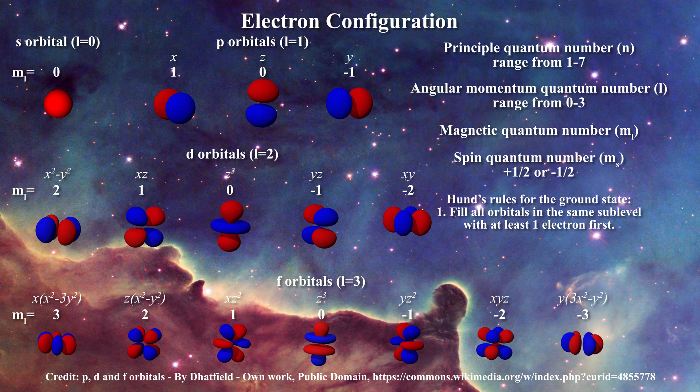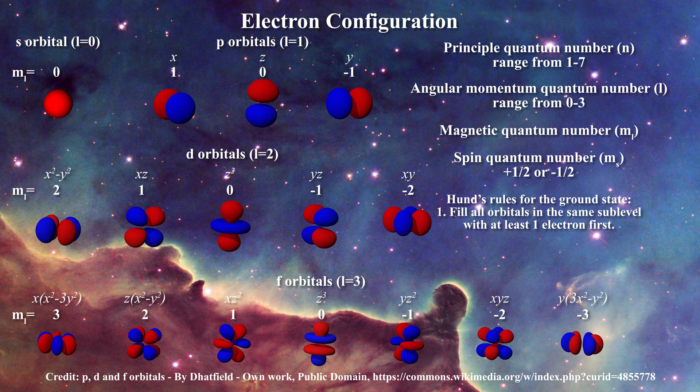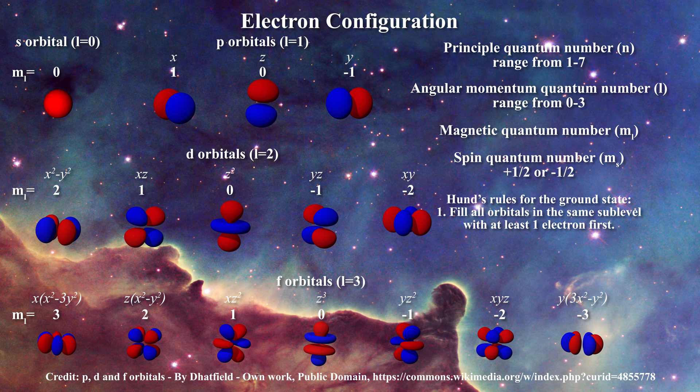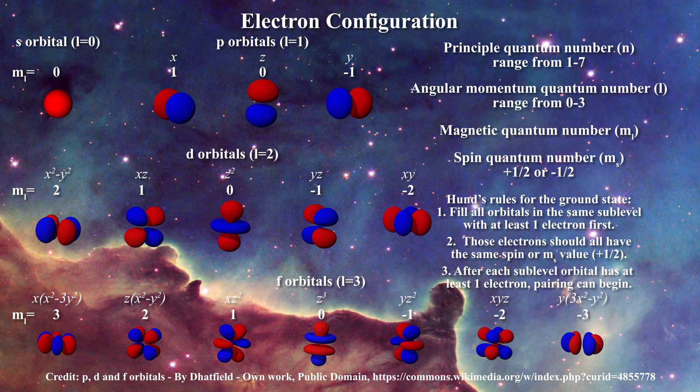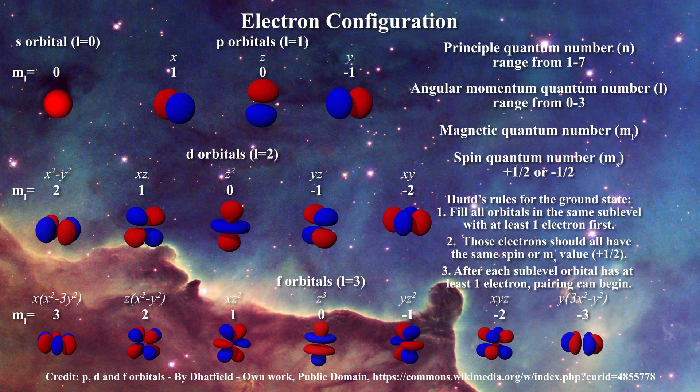Therefore, if three electrons must be placed in p orbitals, a single electron should be placed in each orbital and no pairing of electrons should occur. In that case all the electrons should also have the same spin, usually taken as plus one half. If you have four electrons then you can pair two in the first m sub l equal one shell and so on. The rule about how spins are arranged in orbitals in the ground state is known as Hund's rule.